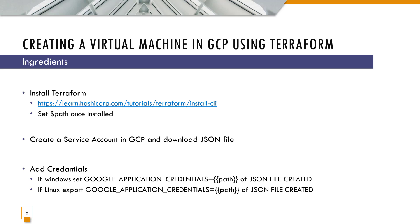The next thing we'll do is create a service account in GCP and download the JSON key file. After we've downloaded it, we will set a variable called Google Application Credentials to that JSON file. In Windows, the command is 'set GOOGLE_APPLICATION_CREDENTIALS' and the path of the downloaded JSON. Similarly, in Linux, it's 'GOOGLE_APPLICATION_CREDENTIALS' and the path of the downloaded file.